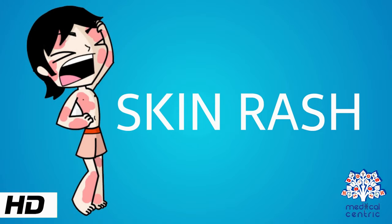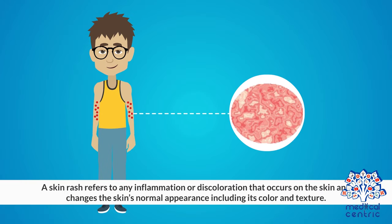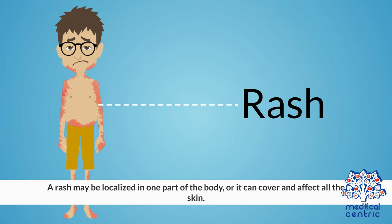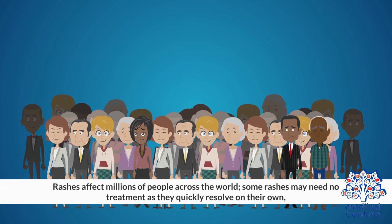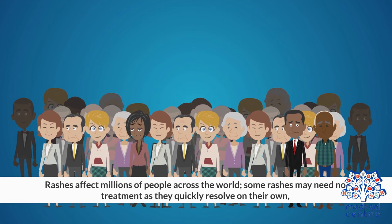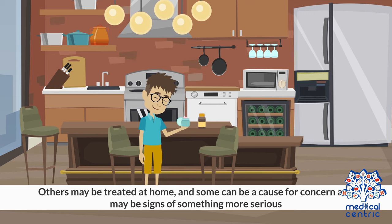Today's topic is skin rash. A skin rash refers to any inflammation or discoloration that occurs on the skin and changes the skin's normal appearance, including its color and texture. A rash may be localized in one part of the body, or it can cover and affect all the skin. Rashes affect millions of people across the world. Some rashes may need no treatment as they quickly resolve on their own. Others may be treated at home, and some can be a cause for concern and may be signs of something more serious.